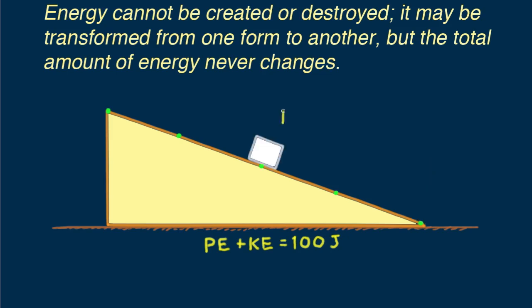So halfway down the plane where the block is half its initial height, the potential energy must be 50 joules. And what does that tell you about the kinetic energy at this point? Can you see it must be 50 joules?